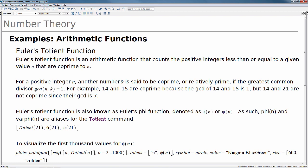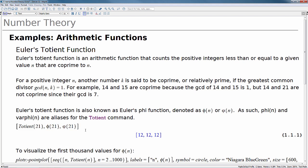Euler's totient function is also known as Euler's phi function and can be denoted as either phi of n or this other phi of n as a variant on this. As such, phi n and var phi n are aliases for this totient command. I just wanted to show this very quickly because you'll see that any one of these is going to be a valid way or a valid syntax for running this command in Maple. They'll all return the exact same value for the totient of the value 21.